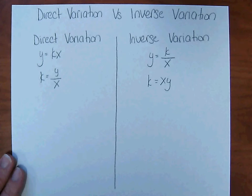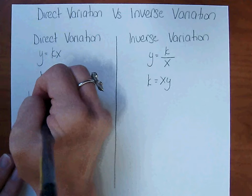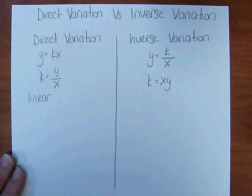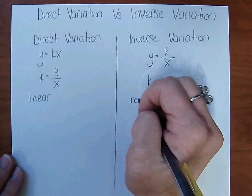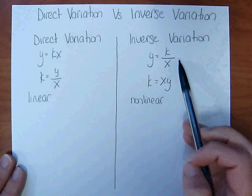Direct variation is linear. X has an exponent of 1 and x is in the numerator. Inverse variation is nonlinear. X has an exponent of 1, however, it's in the denominator.